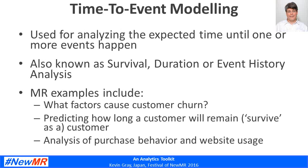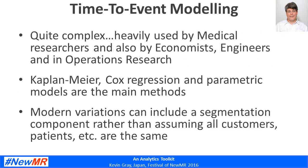There's also something called time-to-event modeling, which goes under different names such as survival analysis, duration analysis, or event history analysis. You use it when you want to analyze the expected time until one or more events happens. Marketing research applications include finding out what factors cause customer churn, predicting how long a customer will survive as a customer, and analysis of purchase behavior and website usage. It's heavily used by medical researchers, economists, engineers, and in operations research, and increasingly in marketing research. Kaplan-Meier, Cox regression, and parametric models are the main methods, with segmentation variants available so you don't have to force one model to fit all customers.